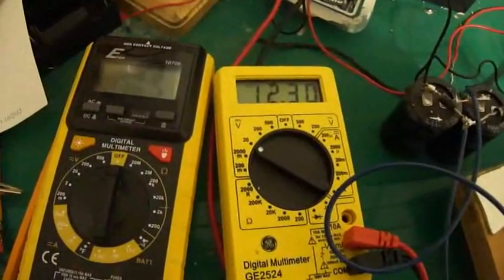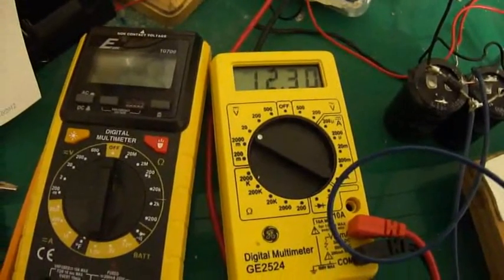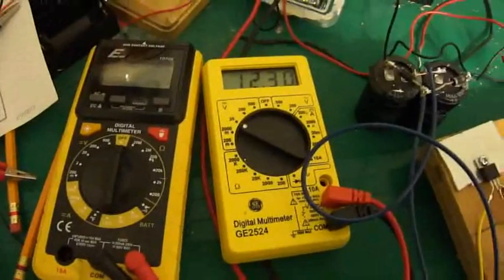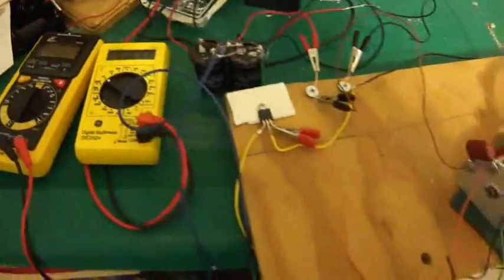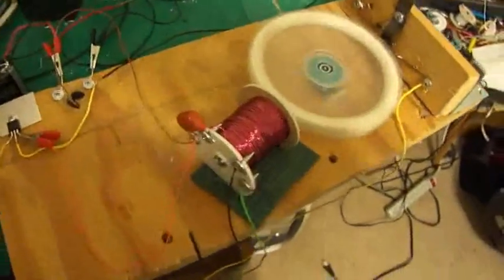And this has been running since 4:30. I started out at 12.4 volts. It is now 12.3 volts. And it's about an hour and a half. An hour and a half and it dropped 0.1 volts.